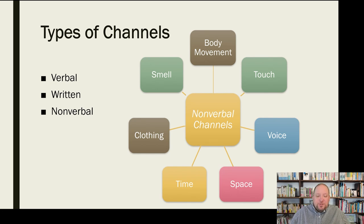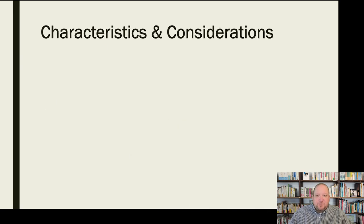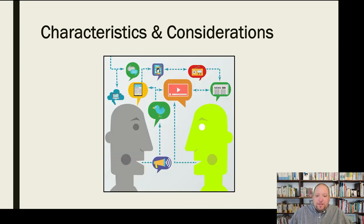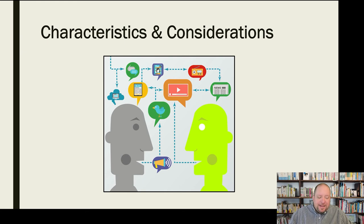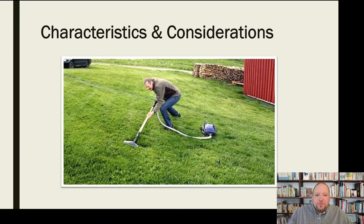So those are the different types of channels: verbal, written, and nonverbal. Within each of those, we have all kinds of different ways to communicate. It's important that we remember we have all these different channels — ancient and modern technologies, our voice, and nonverbal communication. Having all these tools doesn't do any good if we can't use the right tool for the job. Using the wrong tool makes us no more effective than trying to mow a lawn with a vacuum cleaner. We need to use the right communication channel for the particular job.